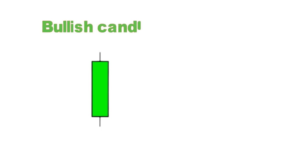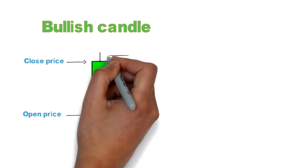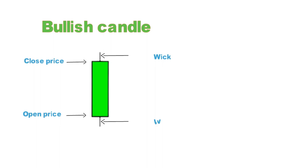This is a green candle, meaning a bullish candle. There are two colors in a candlestick — it could be red or it could be green. This is a green, basically bullish candle. This is opening, this is closing — the lower part and higher part, which we call the wick. This is the upper wick, this is the lower wick.